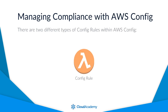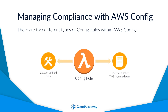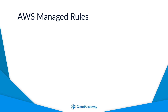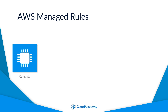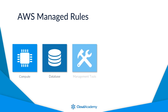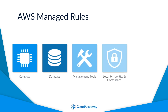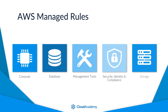There are two different types of config rules within AWS Config: Custom Config rules and AWS Managed Config rules. AWS Managed rules are a set of predefined rules that cover a lot of best practices, so it's always worth browsing these rules first before setting up your own, as there is a chance that the rule may already exist. These Managed rules cover five different topic areas: Compute, Database, Management Tools, Security, Identity and Compliance, and Storage.